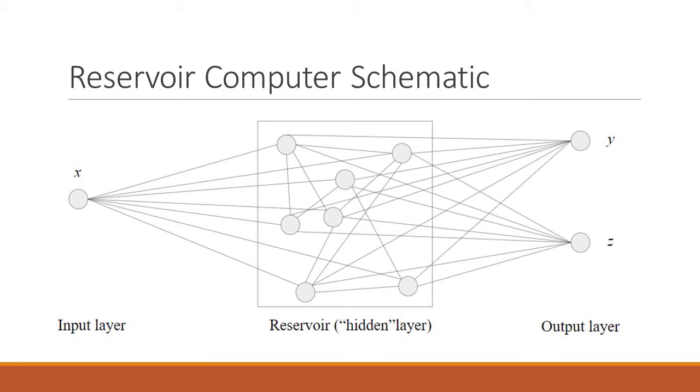To try to understand what a reservoir computer is really doing, imagine each person in this audience is a node. If I gave you some data, that would be x, and you guys all talked to each other, that would be the links. And then at the end you came back to me and said this is our prediction of what y and z would look like. You guys would be like a human being reservoir computer.